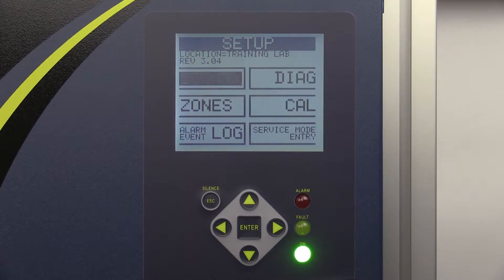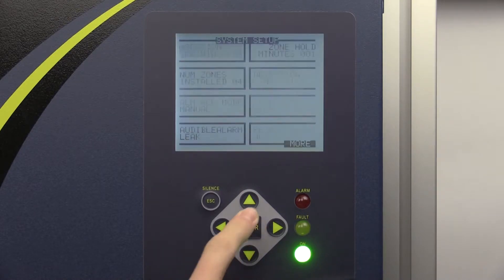You should now be at the setup screen. You will now begin the walkthrough of the system setup options. To access the system setup screen, use the keypad to highlight the system box and press enter.